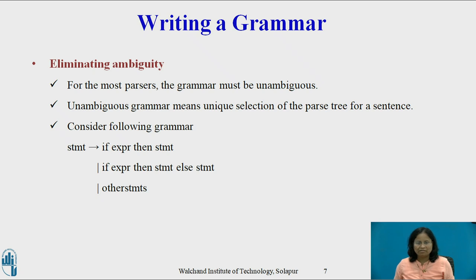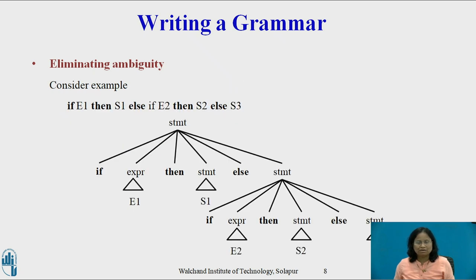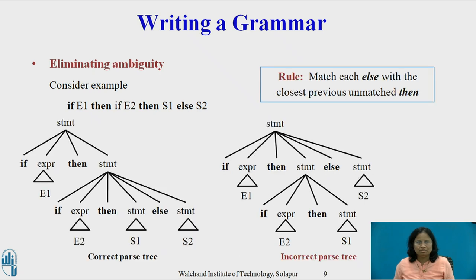The grammar is: Statement → if expression then statement | if expression then statement else statement | other. Here, 'other' stands for any other statement. According to this grammar, the compound conditional statement if e1 then s1 else if e2 then s2 else s3 has the parse tree as shown in the figure. The grammar is ambiguous since the string if e1 then if e2 then s1 else s2 has two parse trees. In all programming languages with conditional statements of this form, the first parse tree is preferred.